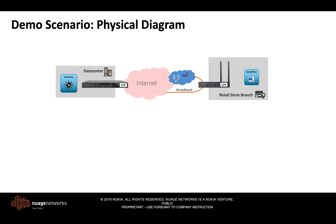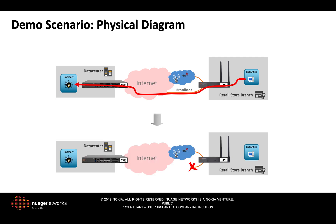In our demo setup, we have the data center on the left side and the retail store branch on the right side. They are connected via internet using two uplinks: broadband internet is the primary uplink and 4G LTE is the backup. In the test, the back-office user in the branch is trying to access the inventory service in the data center. We will demonstrate how shutting down the primary link makes the CPE failover to the 4G connection.